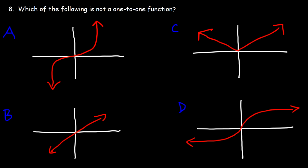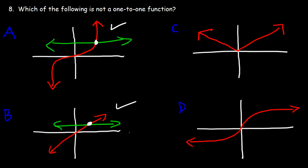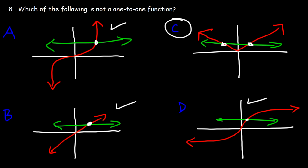Number 8: which of the following is not a one-to-one function — A, B, C, or D? To find out, we need to see which one fails the horizontal line test. Starting with A: if we draw a horizontal line, the curve touches it once, so A is a one-to-one function. If a function is one-to-one, it means the inverse function is also a function — it passes the vertical line test. For B, it passes the horizontal line test as well, so B is one-to-one. D is also one-to-one. Looking at C, it does not pass the horizontal line test — it touches the horizontal line at two points. So C is the answer; C is not a one-to-one function.